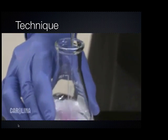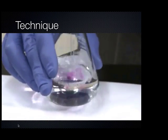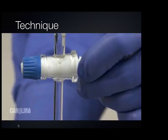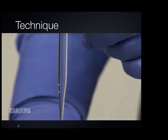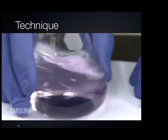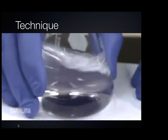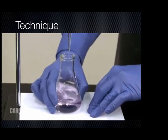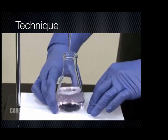To reduce the risk of passing the endpoint, slow down the addition of titrant when flashes of color begin to appear in the analyte. Adjust the stopcock to slow the flow of titrant to a dropwise rate. Continue to swirl the flask with one hand and keep the other hand ready to close the stopcock. When you notice the indicator taking longer to fade, close the stopcock.